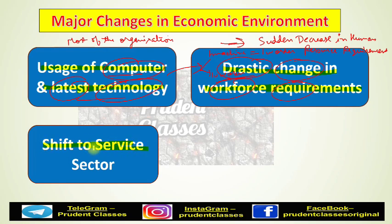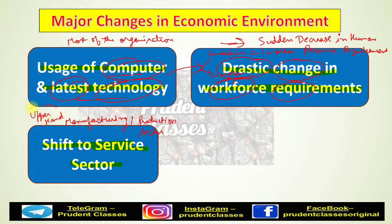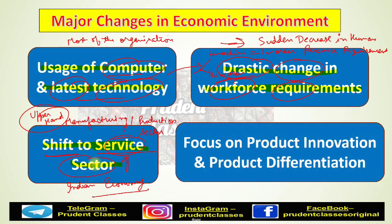The next change you can see in the economic environment is a significant shift towards the service sector. Initially when organizations were created, the focus was more on manufacturing and production — the production sector had the upper hand over agricultural and service sectors. But now a shift has been observed, and the service sector is topping the chart. Particularly in the Indian economy, the service sector is the highest contributing sector.